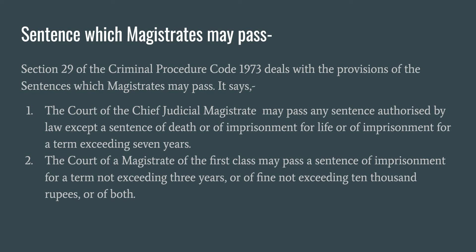The Chief Judicial Magistrate can pass a sentence of imprisonment for a term not exceeding seven years. Second point: the court of a magistrate of the first class may pass a sentence of imprisonment for a term not exceeding three years. It cannot pass any imprisonment exceeding three years — only up to three years. It can also pass a fine not exceeding ten thousand rupees, or both.